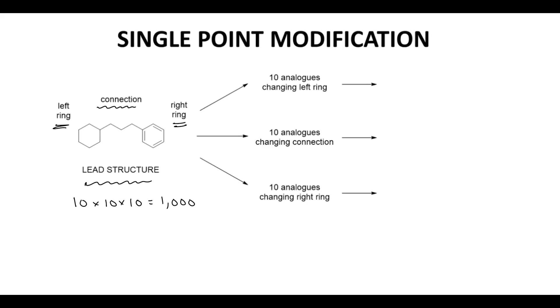Instead, we can assign one chemist to make 10 modifications to each part while keeping the rest of the molecule the same. So 10 changes to the left ring, 10 changes to the chain connection, and then 10 changes to the right ring. That would only require us to make 30 total molecules. 10 plus 10 plus 10.